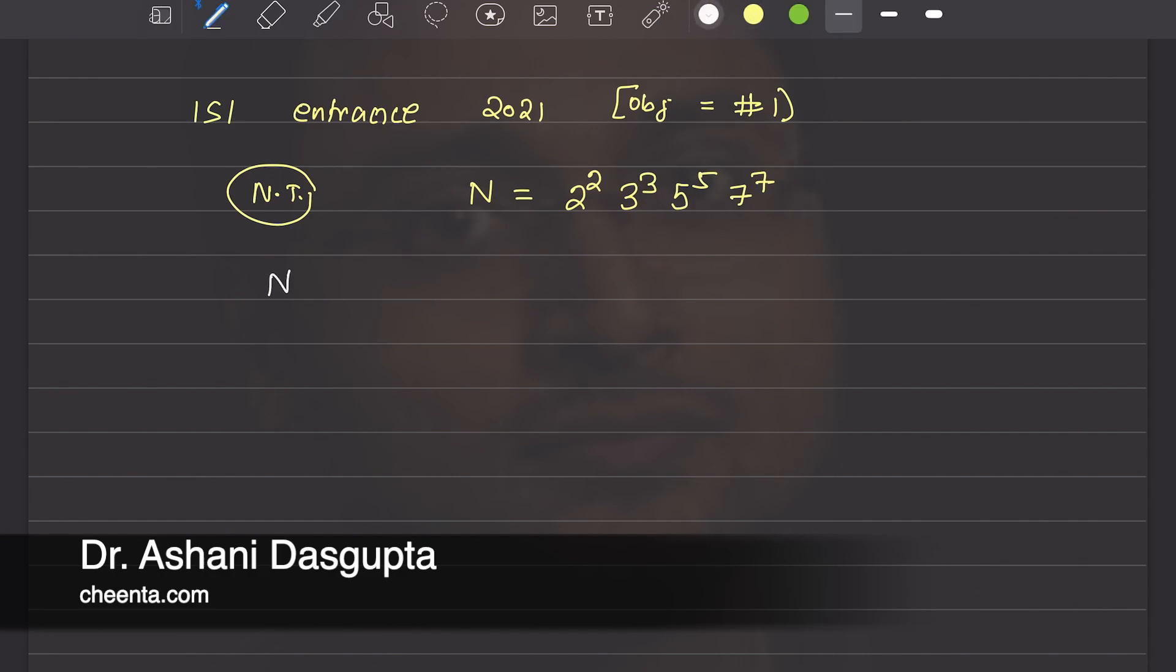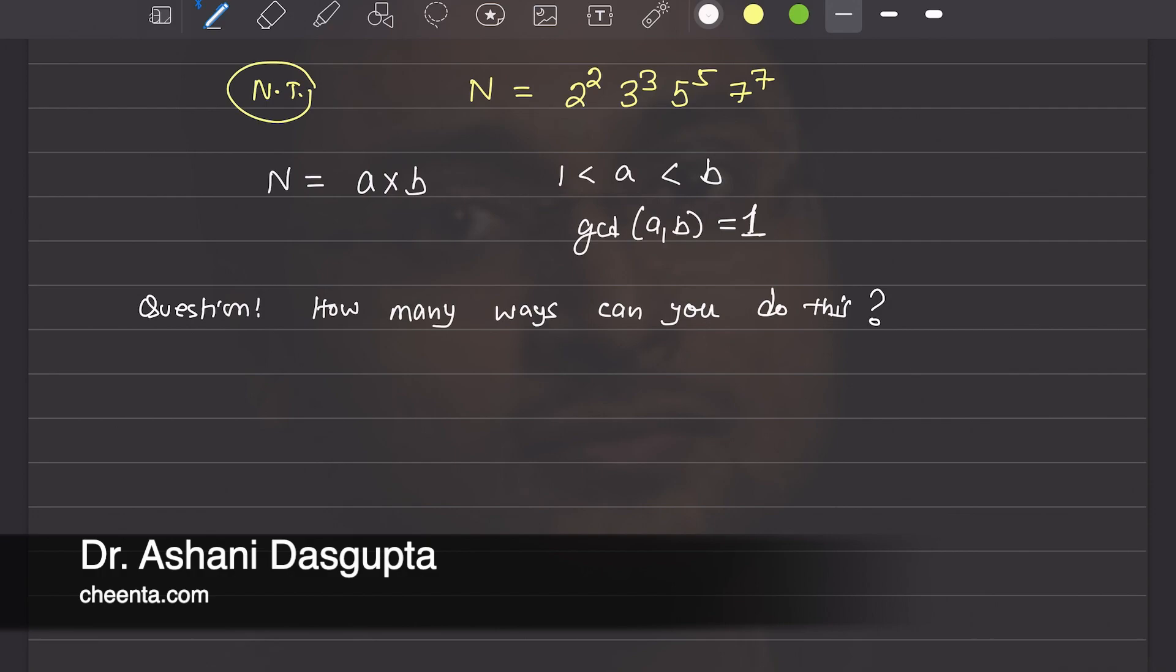We want to write n as a product of two numbers, a and b, such that 1 is less than a is less than b and GCD of a, b is equal to 1. The question is, how many ways can you do this? Instead of working just at the solution, I want to give you a way to think about this problem combinatorially.